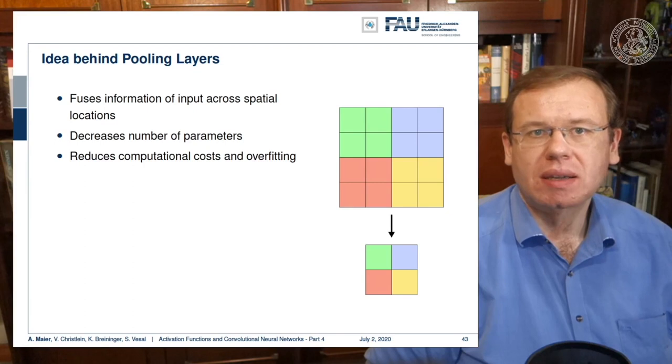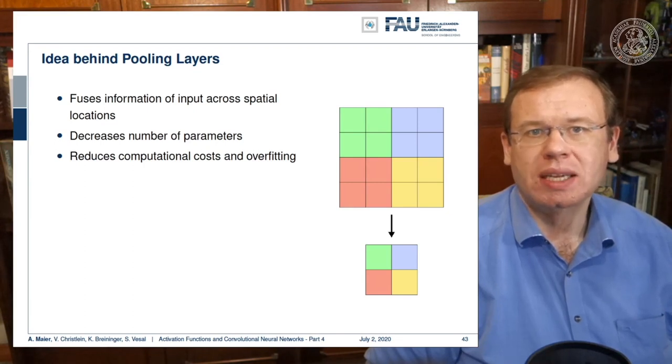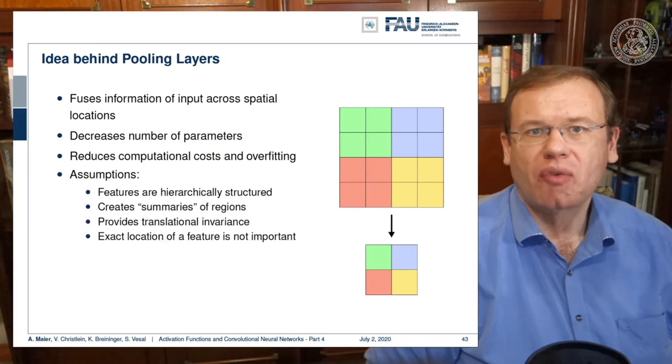Now this of course reduces the number of parameters. It introduces a hierarchy and allows you to work with spatial abstraction. Furthermore it reduces computational cost and overfitting.